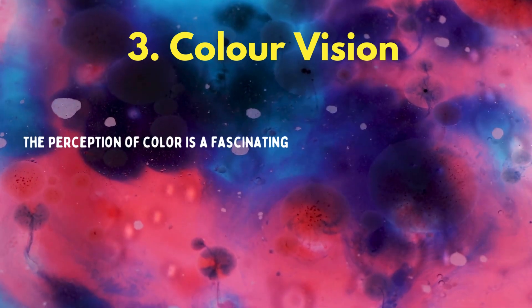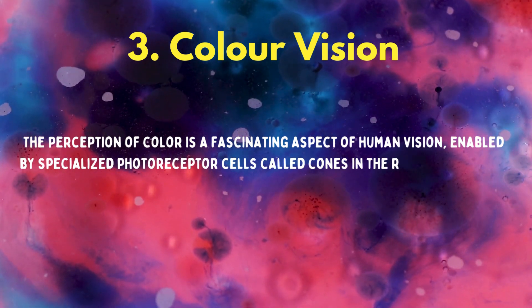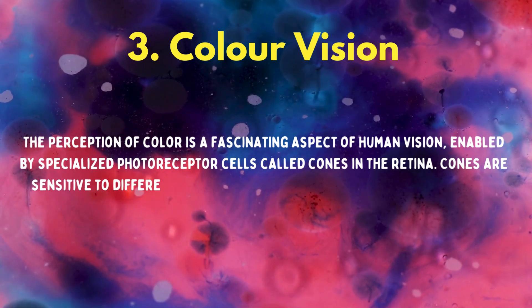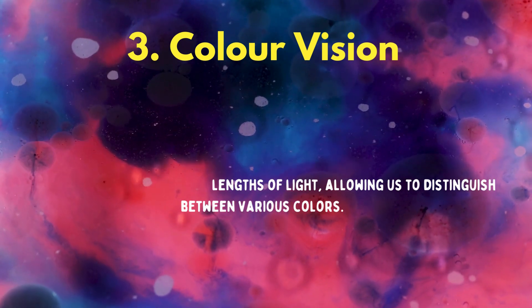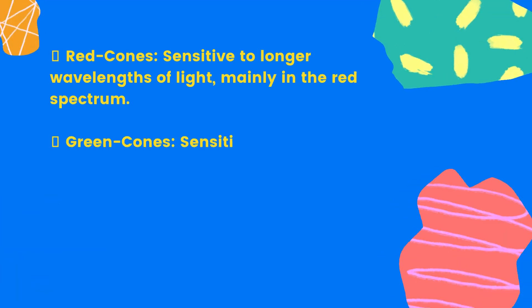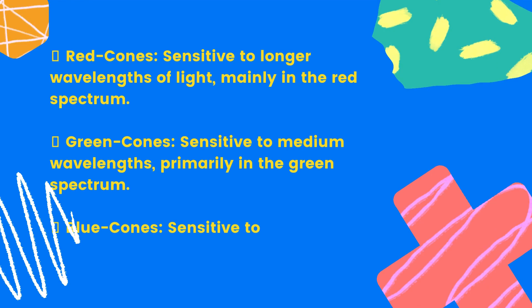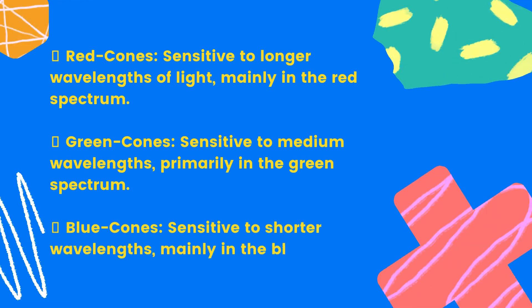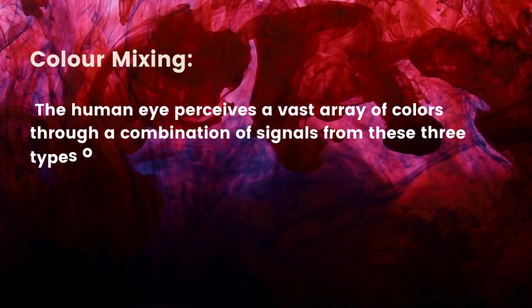Color vision: the perception of color is a fascinating aspect of human vision, enabled by specialized photoreceptor cells called cones in the retina. Cones are sensitive to different wavelengths of light, allowing us to distinguish between various colors. Types of cones: Red cones — sensitive to longer wavelengths of light, mainly in the red spectrum. Green cones — sensitive to medium wavelengths, primarily in the green spectrum. Blue cones — sensitive to shorter wavelengths, mainly in the blue spectrum. The human eye perceives a vast array of colors through a combination of signals from these three types of cones.